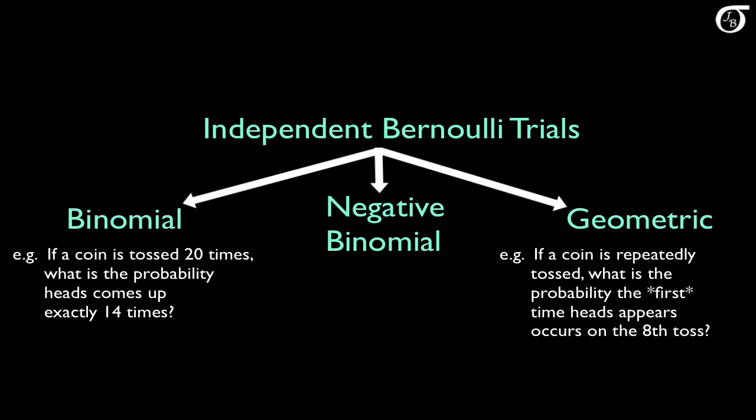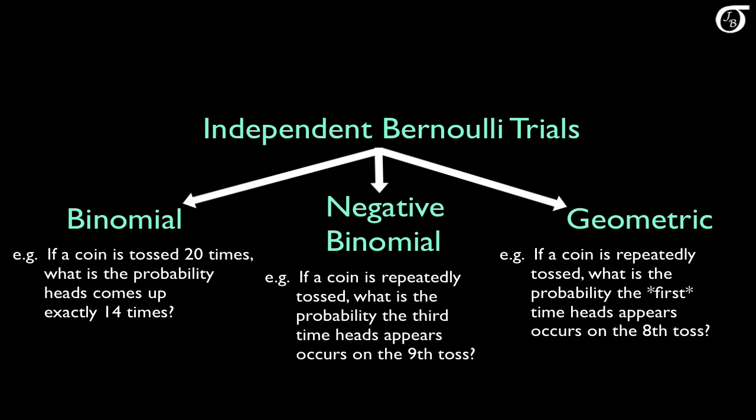The negative binomial distribution is a generalization of the geometric distribution. The negative binomial distribution is the distribution of the number of trials needed to get a certain number of successes in repeated independent Bernoulli trials. So the negative binomial distribution can help us answer a question like: if a coin is repeatedly tossed, what is the probability the third time heads appears occurs on the ninth trial?